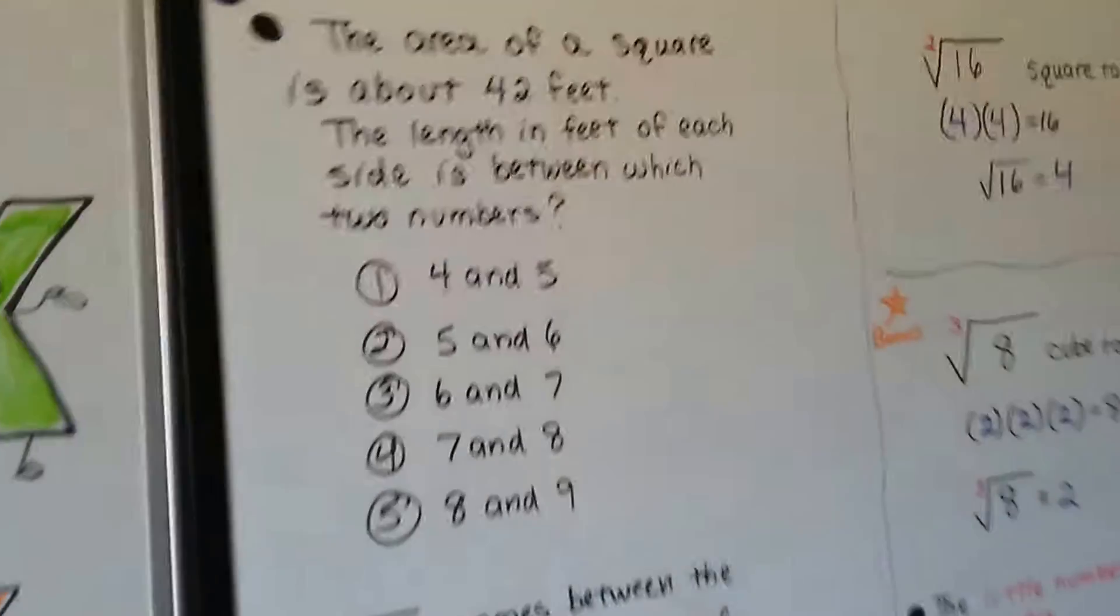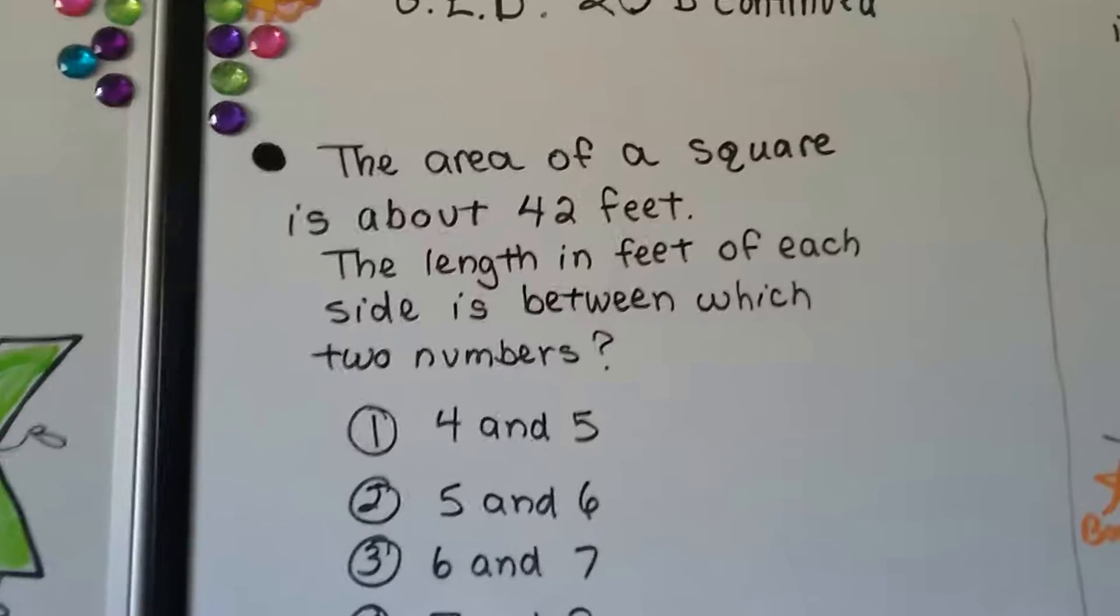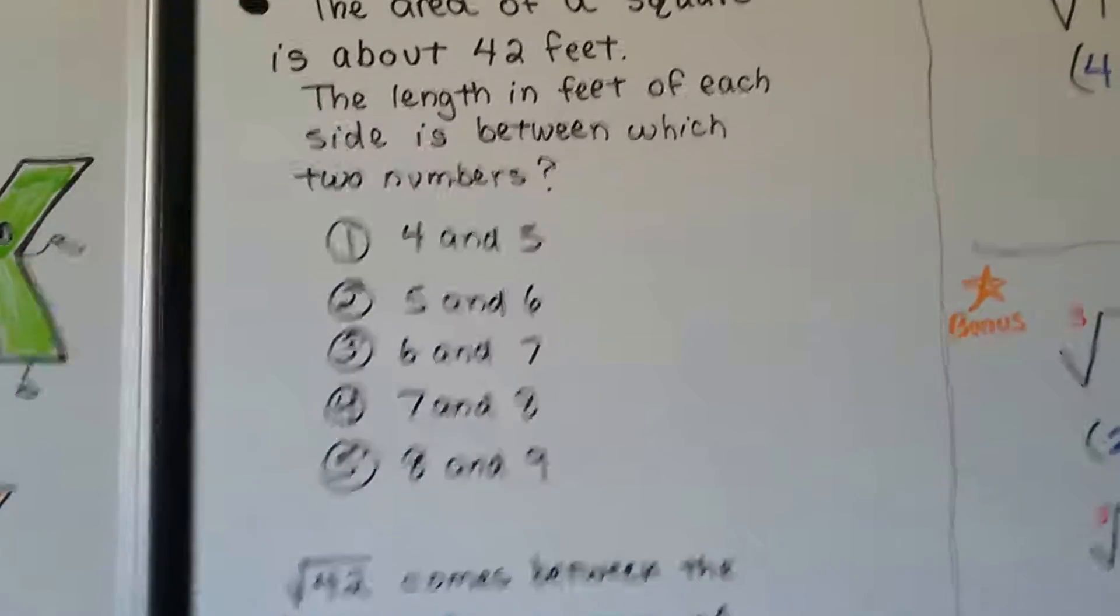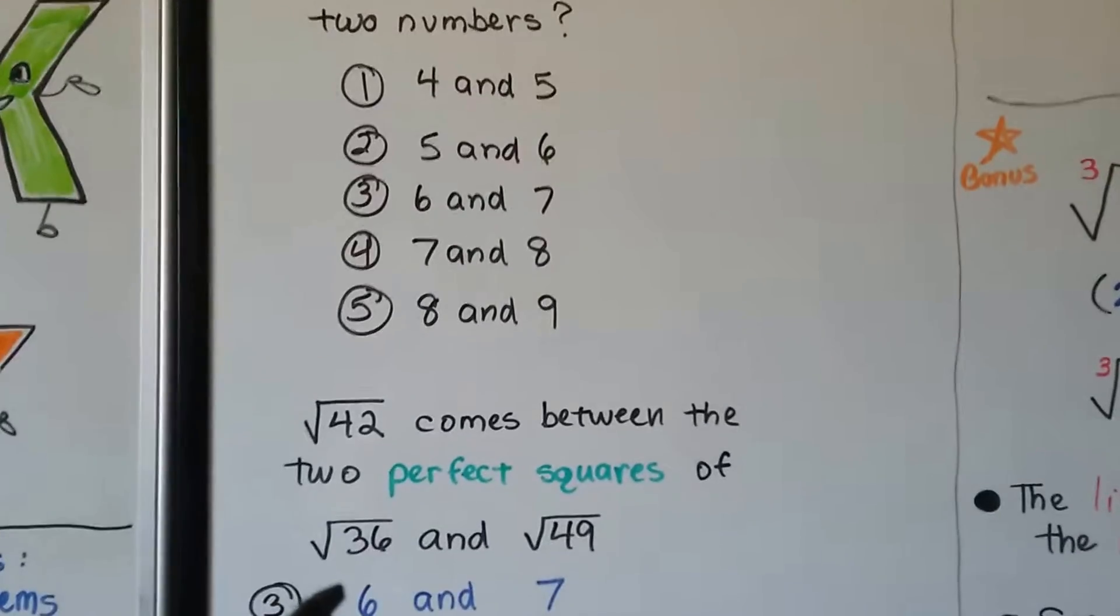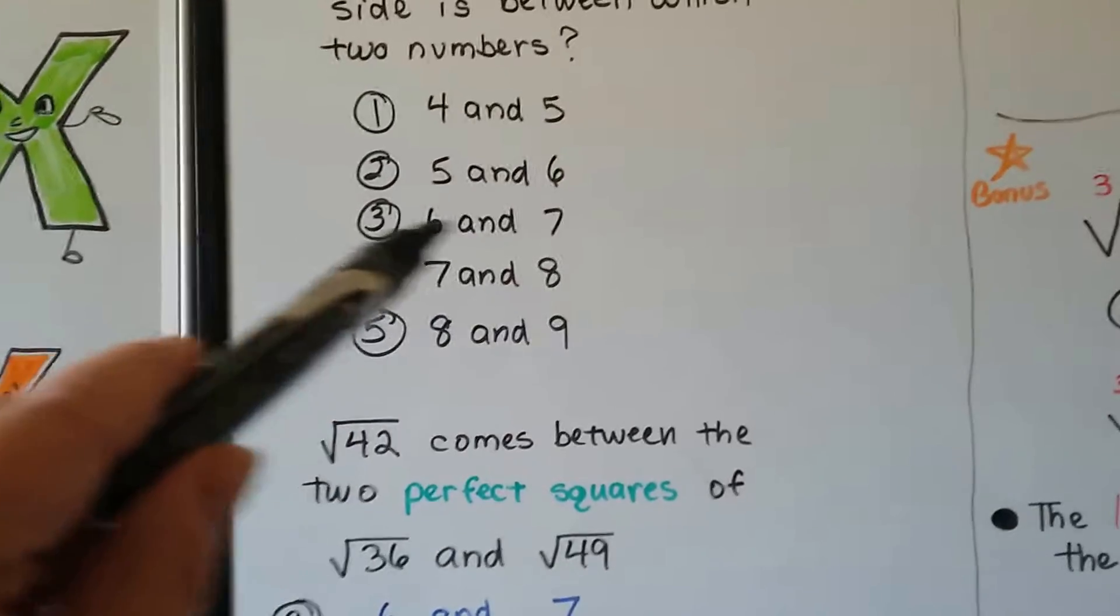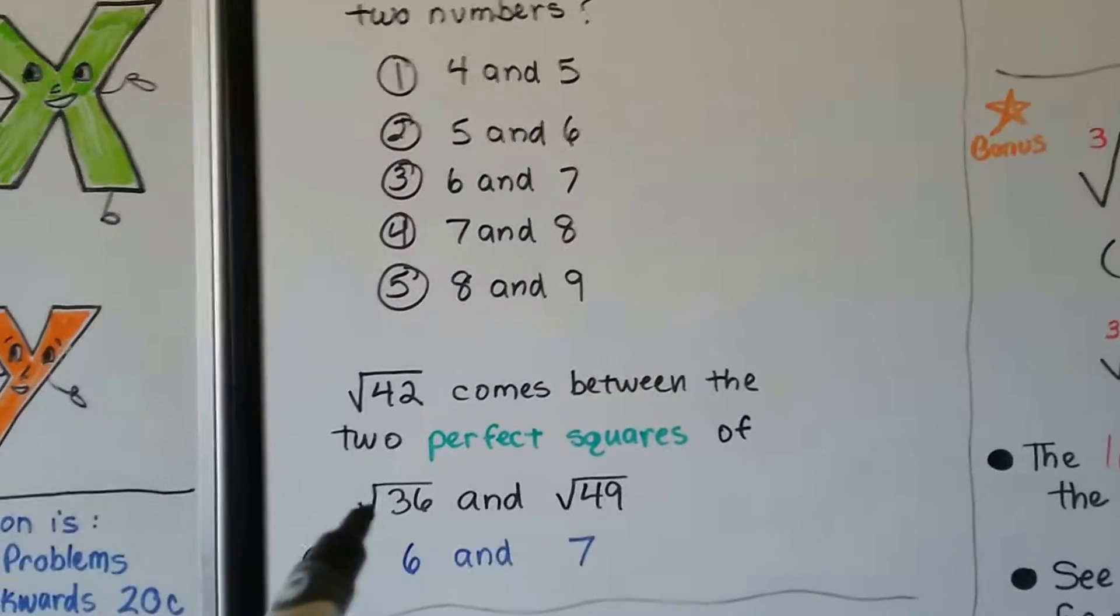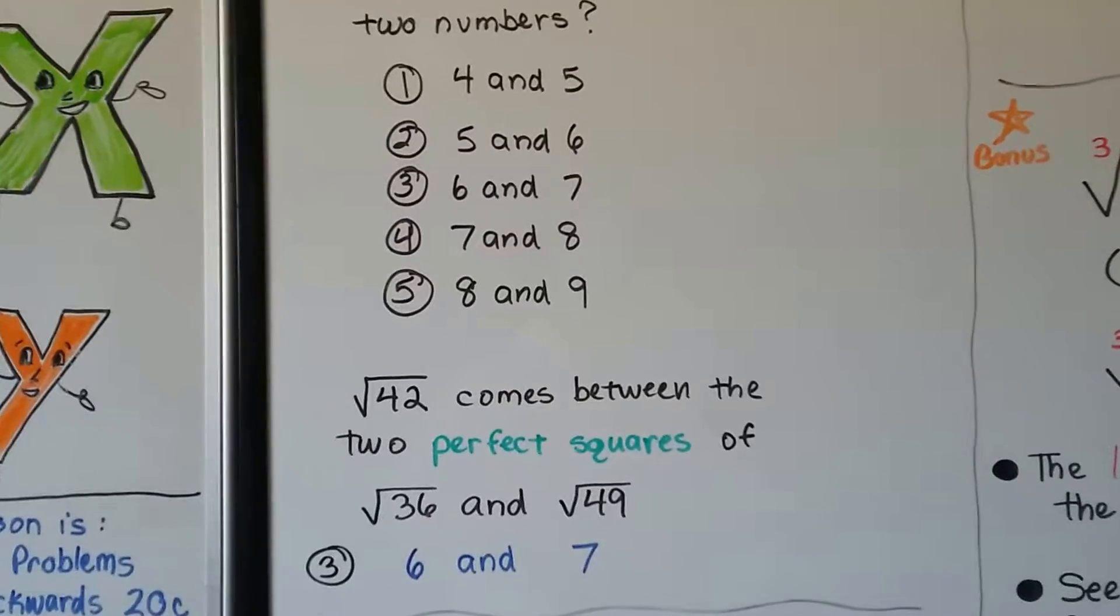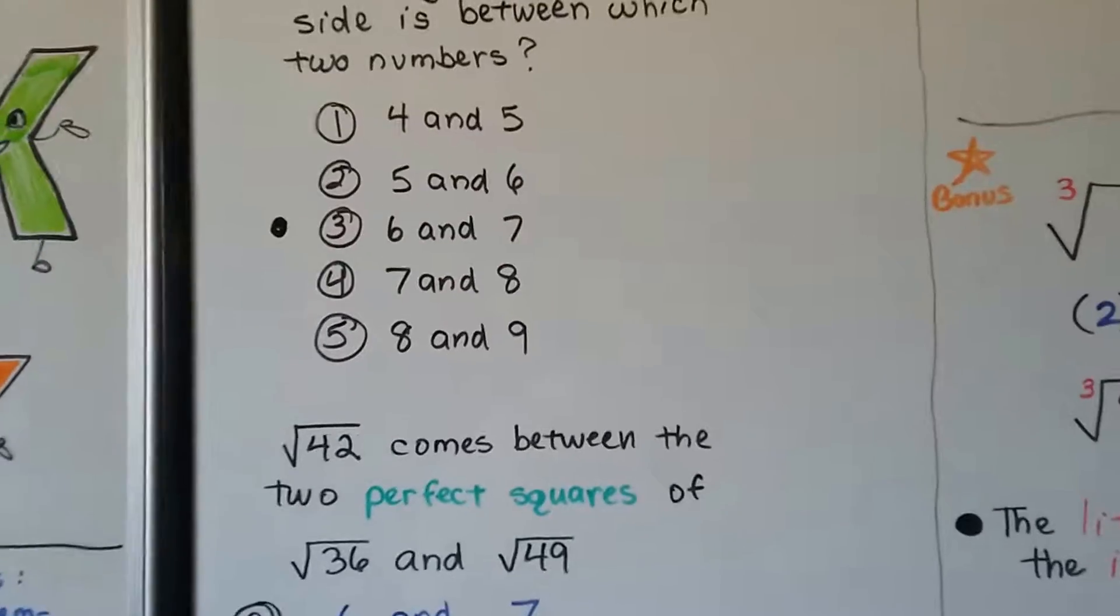So, this says the area of a square is about 42 feet. The length in feet of each side is between which two numbers? So, 42. 42 comes between two perfect squares, 36 and 49. And the square root of 36 is 6. And the square root of 49 is 7. So, the answer is 3. It comes in between 6 and 7. 42 falls right in between these. So, it's going to be a 6 decimal number if we tried to find it exactly. So, the answer is 3. It falls in between 6 and 7. You might find problems like that on the test.